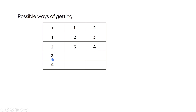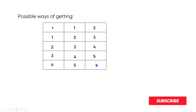Taking 3 from first box and 1 from second box gives a sum of 4. Taking 3 from first group and 2 from second group gives a sum of 5. Taking 4 from first box and 1 from second box gives a sum of 5. Taking 4 from first box and 2 from second box gives a sum of 6.